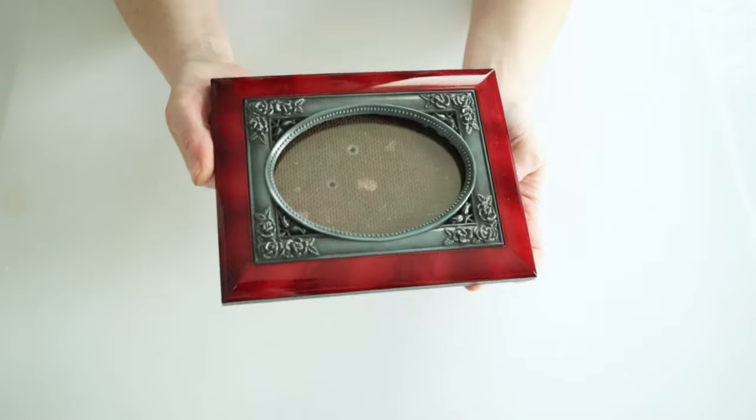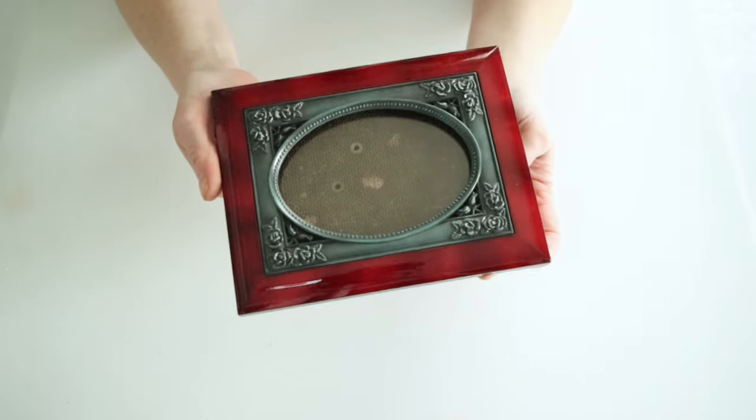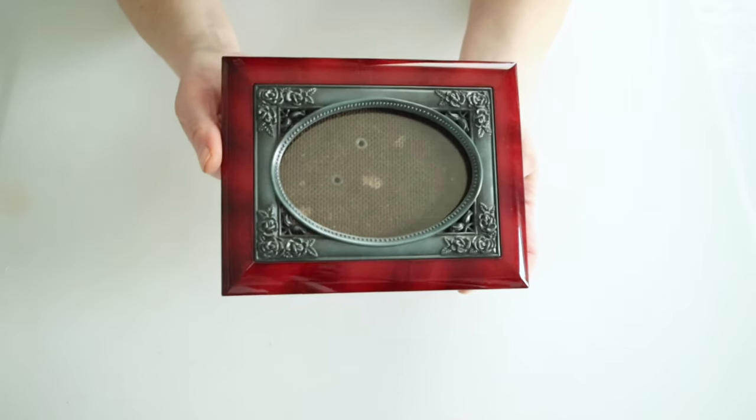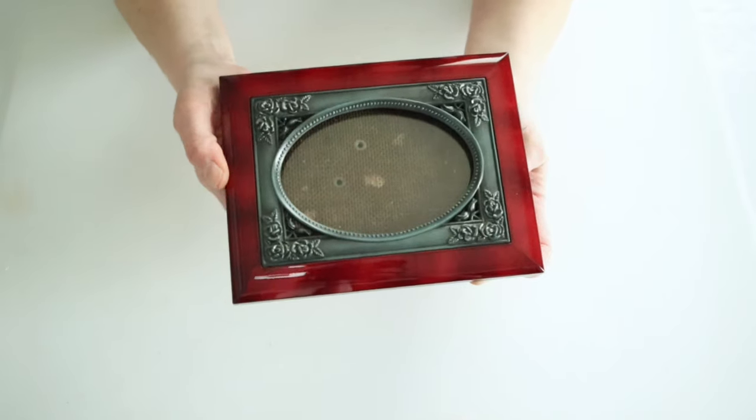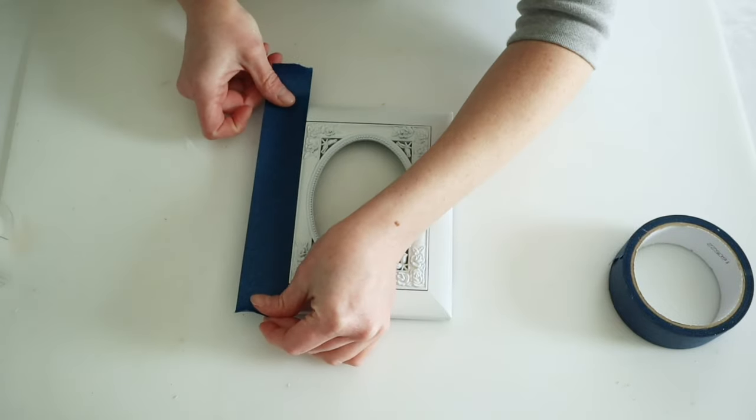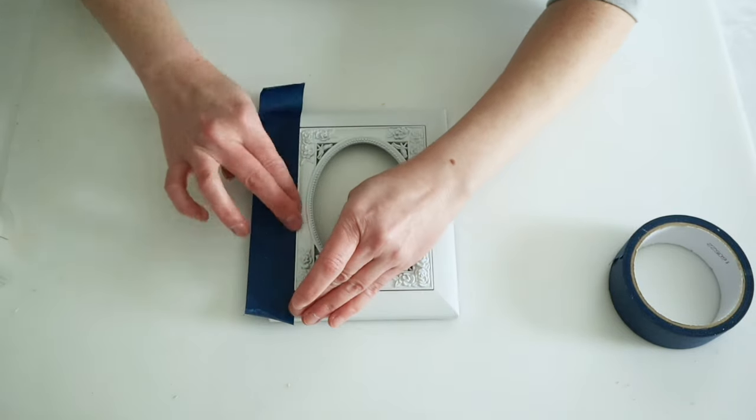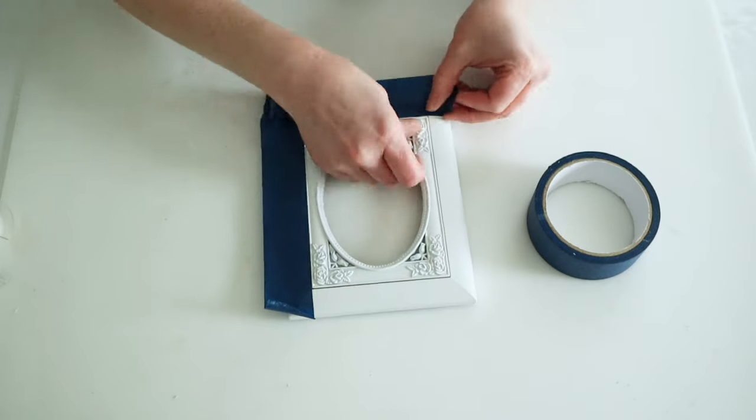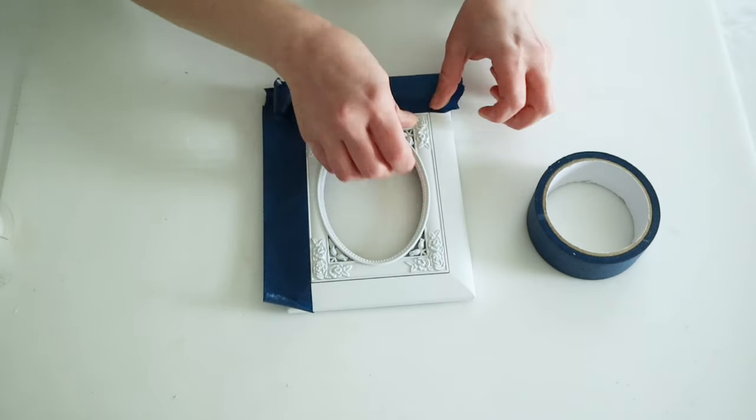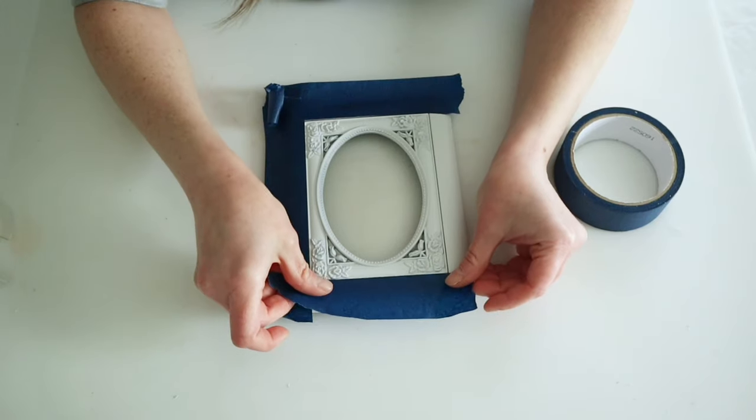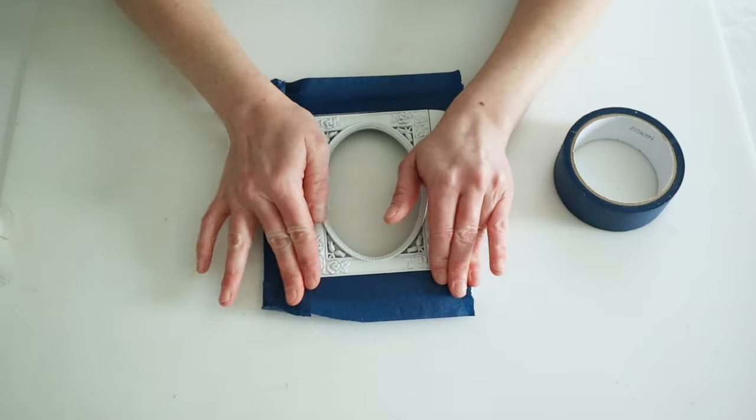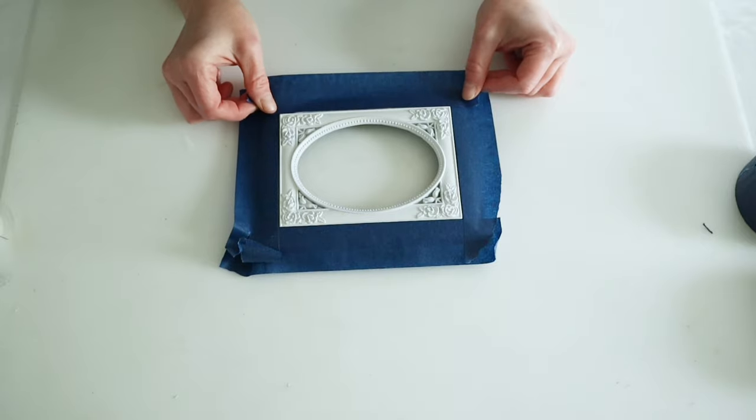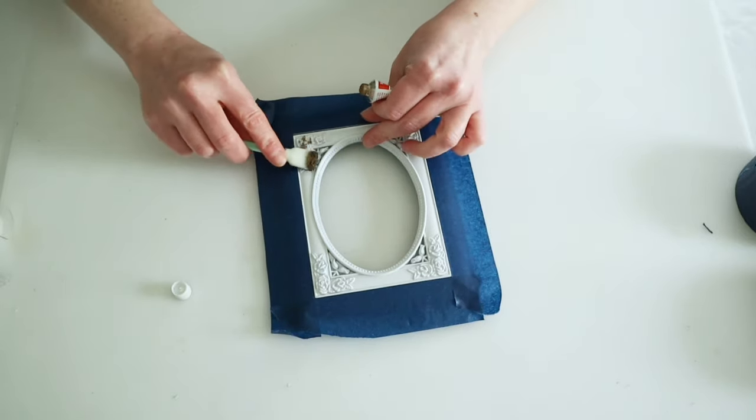Starting out with this first project, I picked up this gorgeous frame from my local thrift store. It definitely wasn't the color that I wanted, so I took this outside and spray painted it with some white Rust-Oleum spray paint. Once it was dry, I brought it back inside and I'm using some painter's tape to tape off that inner frame.